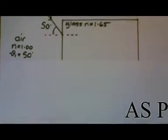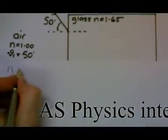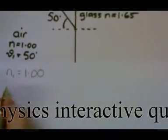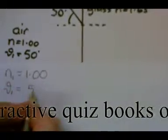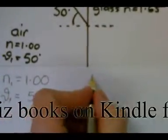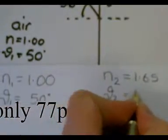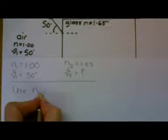How to solve the problem? Write down the things you know and don't know. I'm going to have air as material 1 and glass as material 2. N1 equals 1.00, theta 1 equals 50 degrees, N2 equals 1.65, theta 2 equals question mark. Write down the equation we will use.